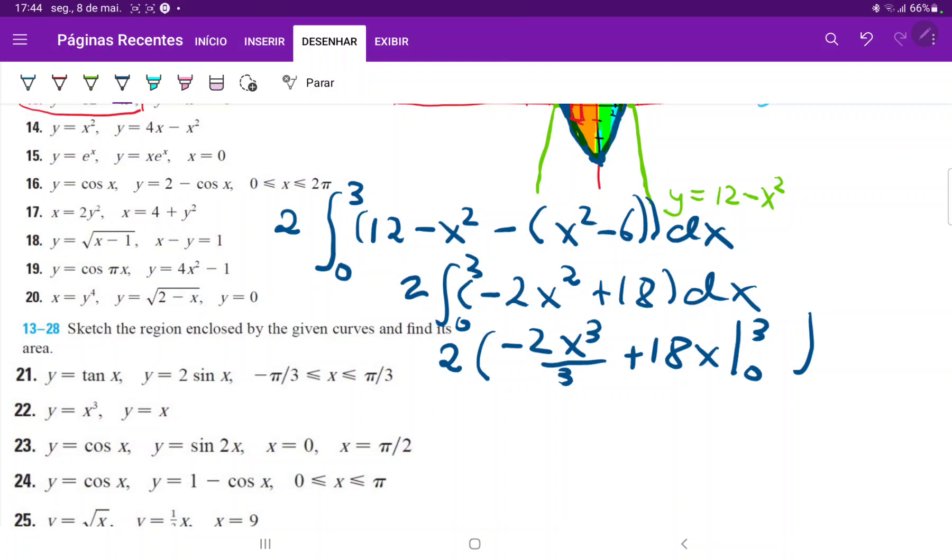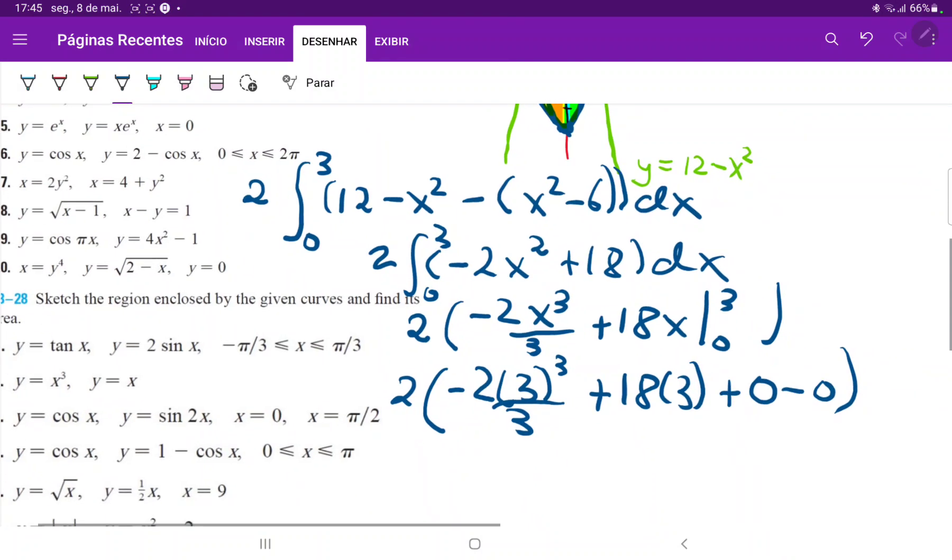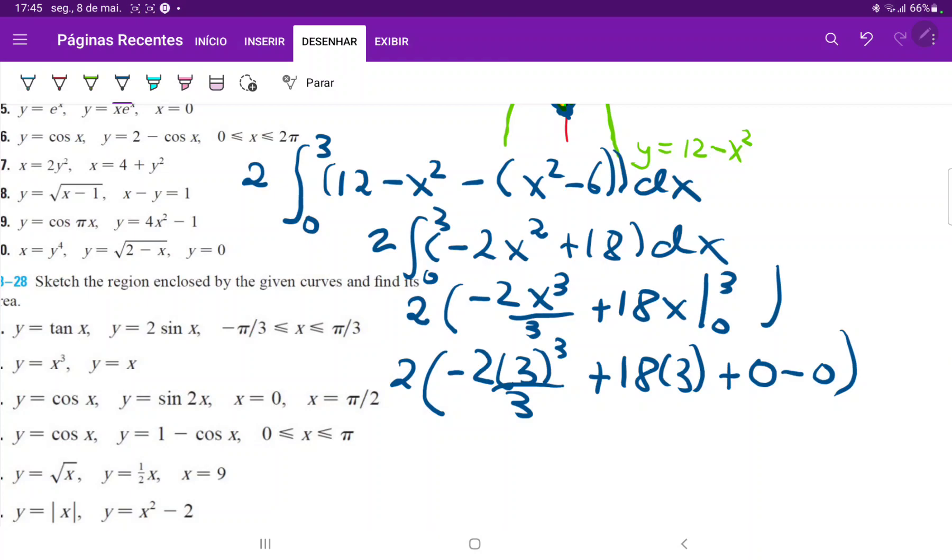So we are just going to apply the 3 in the bound. So that is minus 2 times 3 cubed divided by 3 plus 18 times 3. And then this would just be plus 0 minus 0. I'll just put that so that we don't forget to apply our lower boundaries.